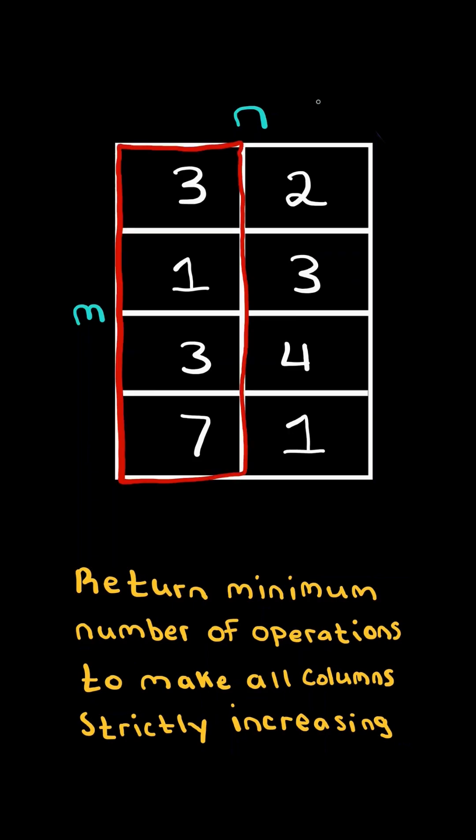For example, for the first column, we need to update 1 to 4. That way, it's strictly bigger than 3. From 1 to 4, it's 3 operations.